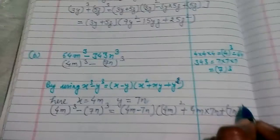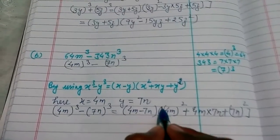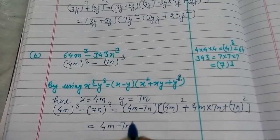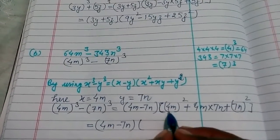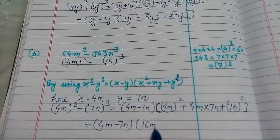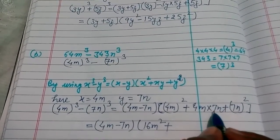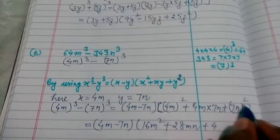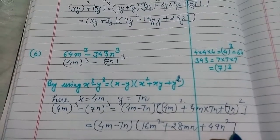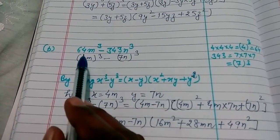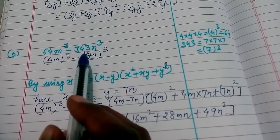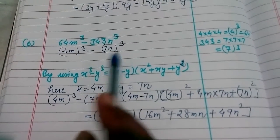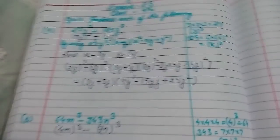Expanding further: (4m - 7n)(16m² + 28mn + 49n²). So therefore 64m³ - 343n³ equals (4m - 7n)(16m² + 28mn + 49n²). This is the factorization. In this way we have solved question number 10.